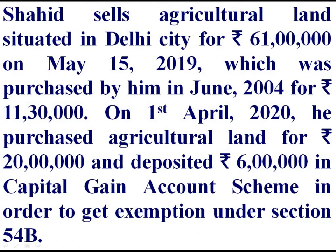On 1st April 2020, he purchased agriculture land for Rs 20 lakh and deposited Rs 6 lakh in Capital Gain Account Scheme in order to get exemption under Section 54B. He avails exemption under Section 54B because he purchases another agriculture land and deposits the capital gain under Capital Gain Account Scheme 1988.